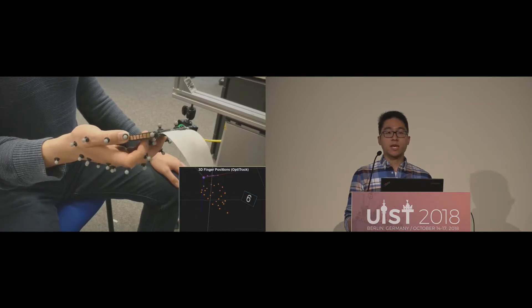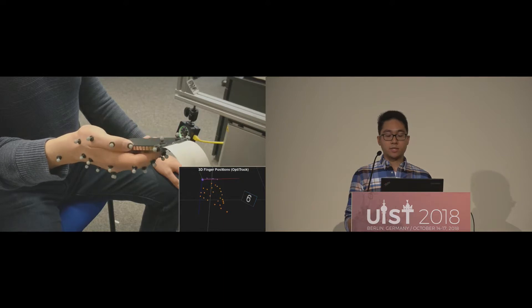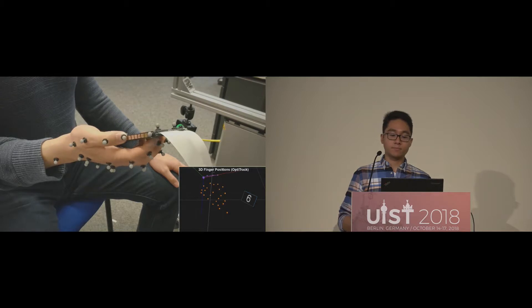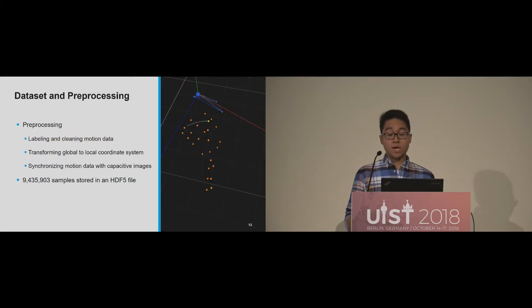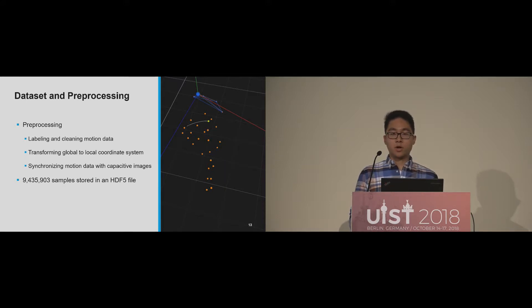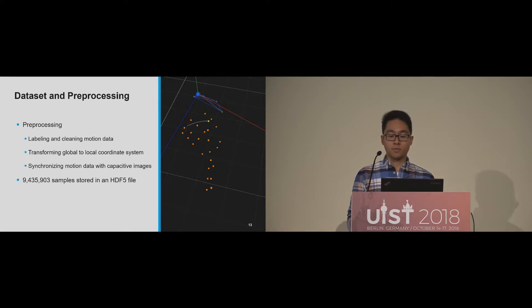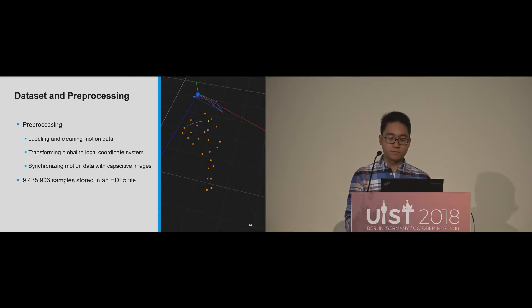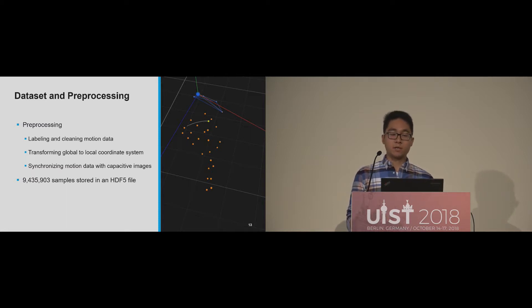On the right, we can see the captured 3D finger positions as provided by our OptiTrack system. After the study, we pre-processed our dataset to assign the 3D finger positions to each capacitive image. First, we labeled all recorded markers using the semi-automatic labeling approach provided by the OptiTrack software, and removed all incomplete frames due to occlusion problems. We then transformed the marker positions to a local coordinate system so that each marker represents the 3D distance to the upper left corner of our device. Finally, we matched the capacitive images to the 3D motion data based on their millisecond timestamps. In total, we had over 9 million samples, stored in an HDF5 file for model training.